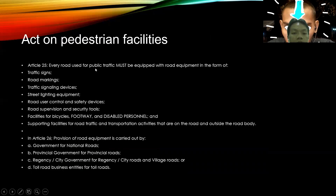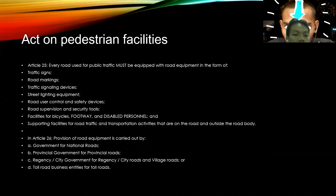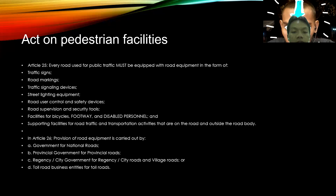Part of road facility regulation. Article number 25: every road used for public traffic must be equipped with route equipment in the form of traffic signs, road markings, traffic signaling, defense, street lighting equipment, route user control and safety, route supervision, and security tools. Facilities for bicycles, footways, disabled facilities, and supporting facilities for route driving and transportation activities that are on the road and outside of the road.